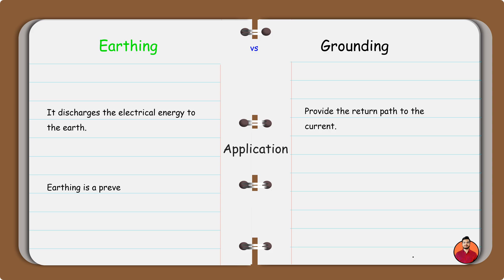Earthing is a preventive measure. Grounding is a backup pathway in electrical systems.